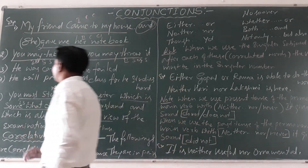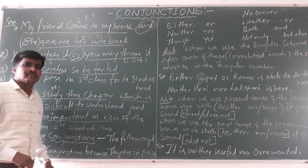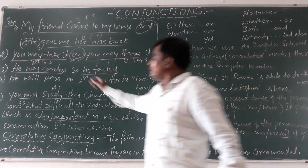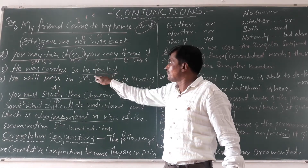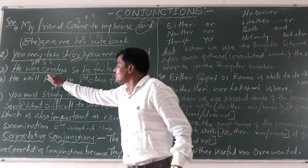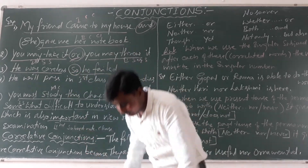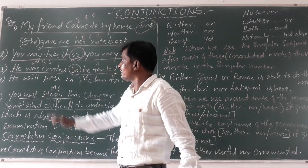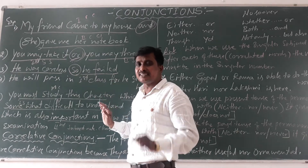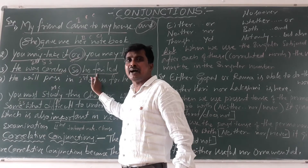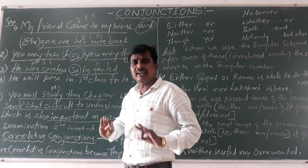Let us see another example. 'He was careless, so he failed.' 'He was careless' is the first simple sentence and 'he failed' is the second simple sentence. These two simple sentences are joined by the coordinate conjunction 'so'. Simple sentence and simple sentence, class and class.